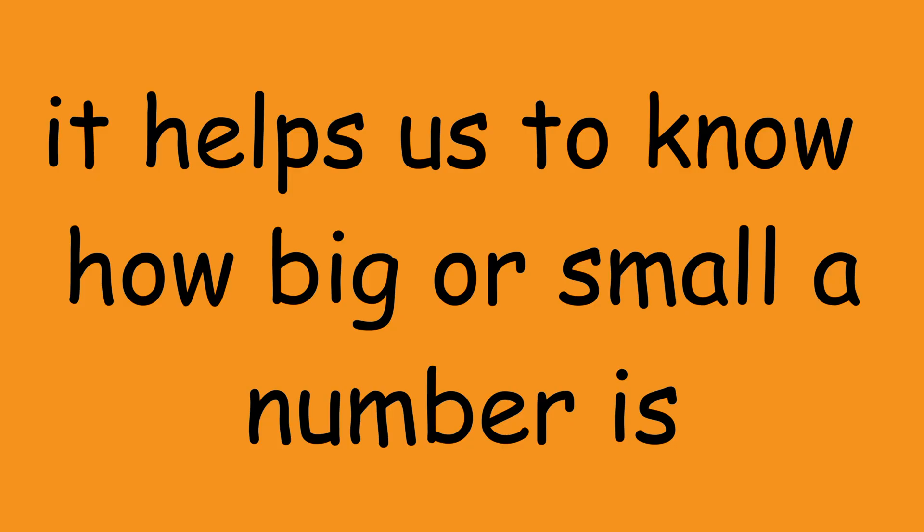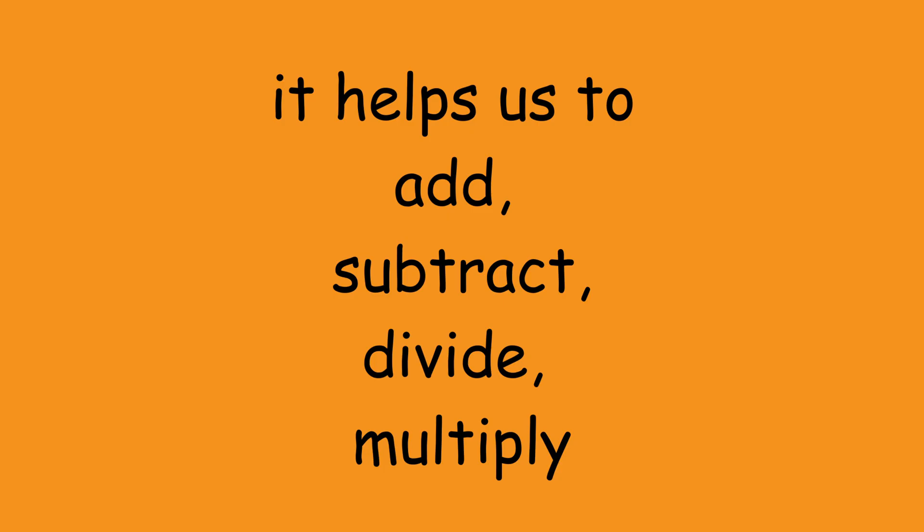Do you see how powerful place value can make digits? So instead of having five, five, five, five, you have five thousand five hundred fifty-five. Place value helps us understand how big or small a number is. It also helps us to add, subtract, and do other math easily. It also shows how numbers are made of parts — thousands, hundreds, tens, and ones.